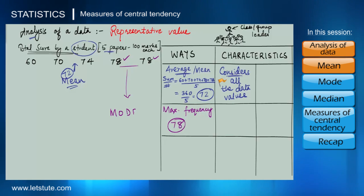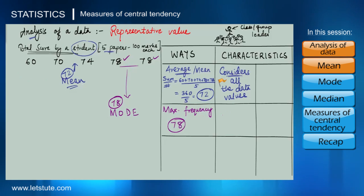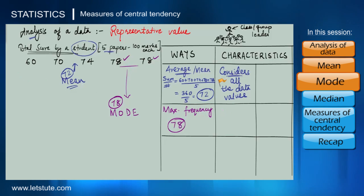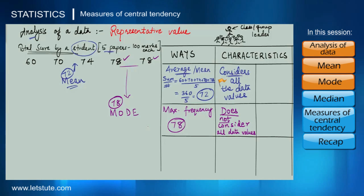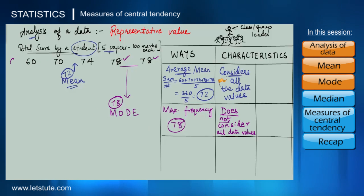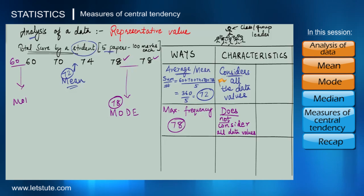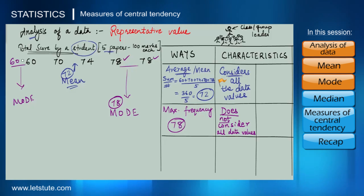Reporting the value with maximum frequency is called mode. To find mode, we don't really require all the data values — so unlike mean, mode does not consider all the data values. It can also happen that some other value also repeats, say if there were two 60s as well, so that would also be a mode. A data can have one mode, more than one mode, or no mode at all.